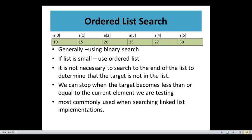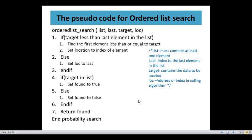Let's see the example — we are using this for a linked list. Ordered list: list, last, target, and location. If the target is less than the last element in the list, find the first element less than or equal to the target. First compare the first element with the last element of the array, then find the first element less than or equal to the target and set location to the index of that element. Otherwise, set location to last, then end if.